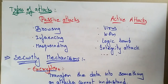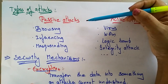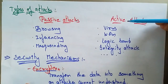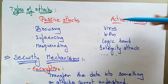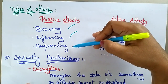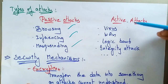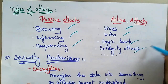Let's continue with security in distributed systems. There are different types of attacks: passive attacks and active attacks. Passive attacks include browsing, interferencing, and masquerading. Active attacks include viruses, worms, logic bombs, and integrity attacks, among many others.